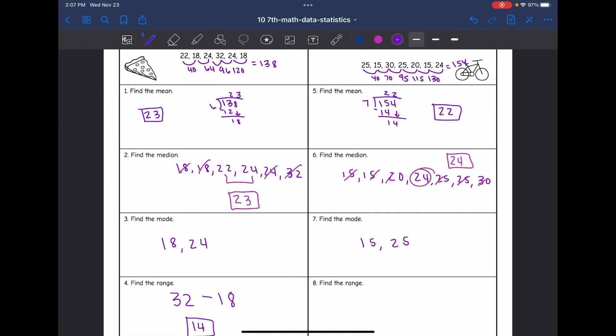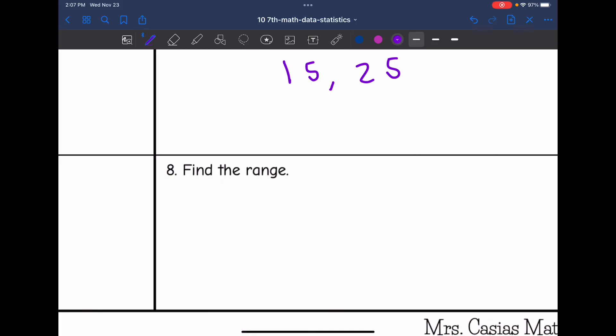And then I need to find the range by doing the largest minus the smallest. The largest number is 30. The smallest number is 15. So 30 minus 15 is 15.